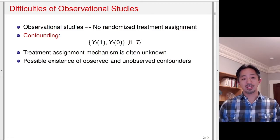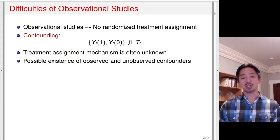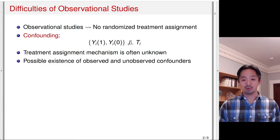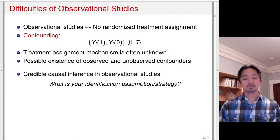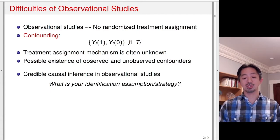Another problem of observational studies is the possible existence of unobserved confounders. Not just observed confounders, which we might be able to measure, but there may be unobserved confounders for which we have no measurement. This means that credible causal inference in observational studies is difficult, and you have to figure out the identification assumption or identification strategy — we need to make some assumptions in order to identify causal effects.